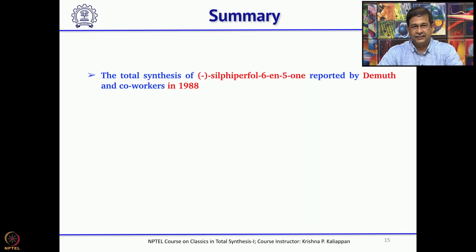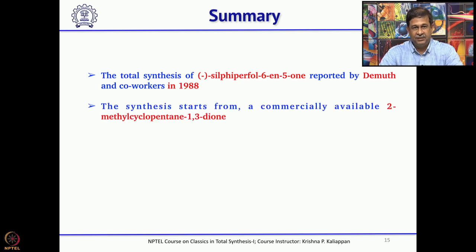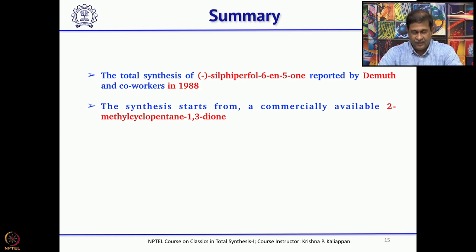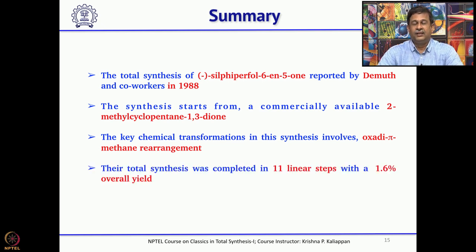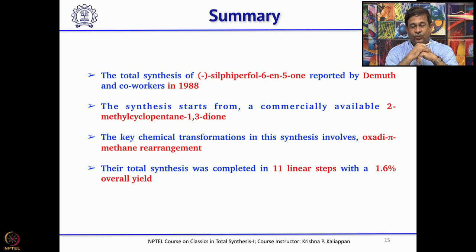Looking at this synthesis overall: the key step was the oxa-di-pi-methane rearrangement. They started from commercially available 2-methylcyclopentane-1,3-dione, used Robinson annulation to make Hajos–Parrish ketone, and overall this total synthesis was accomplished in 11 longest linear steps with an overall yield of 1.6%.